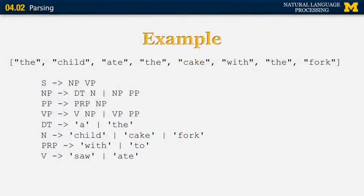Let's look at an example. The sentence we want to parse is 'the child ate the cake with a fork.' The grammar here is a context-free grammar with eight non-terminal symbols: S for sentence, NP, PP, and VP for noun phrase, prepositional phrase, and verb phrase respectively; DT for determiner, N for noun, preposition, and past tense verbs. Some rules have options — for example, a noun phrase can be either a determiner followed by a noun, or recursively a noun phrase followed by a prepositional phrase. These alternative rules lead to multiple parses for a given sentence.